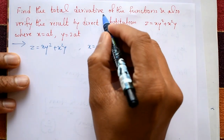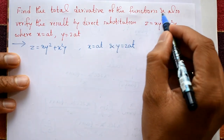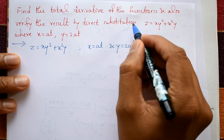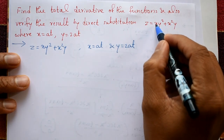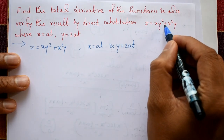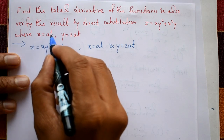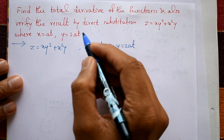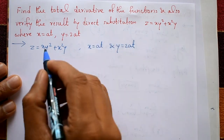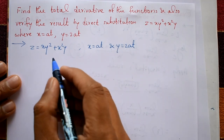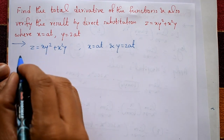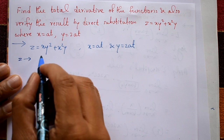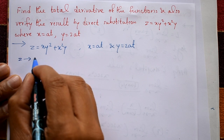Find the total derivative of the function and also verify the result by direct substitution. z is given as z = xy² + x²y, where x = at and y = 2at.